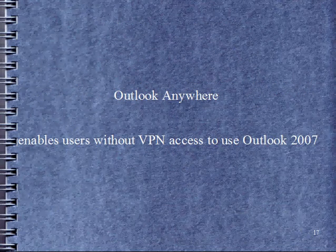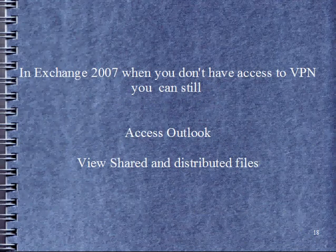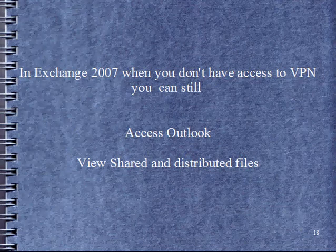Outlook Anywhere enables users without VPN access to use Outlook 2007. In Exchange 2007, when you don't have access to VPN, you can still use and access Outlook to view shared and distributed files.